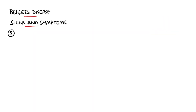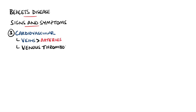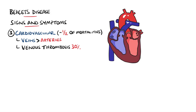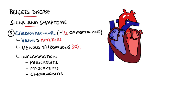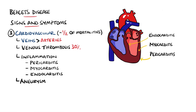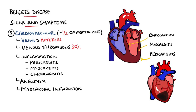The cardiovascular system is heavily involved, and both arteries and veins of all sizes may be affected; however, venous involvement is more common, and approximately 30% of patients have venous thrombosis. Mortality in Behçet's disease is around 9%, and cardiovascular disease is responsible for around half of this. Inflammation of the heart layers may also be seen, including pericarditis, myocarditis, or endocarditis. Arterial aneurysms are another feature — their rupture can cause haemorrhage — and thrombosis of the coronary arteries can lead to myocardial infarction.